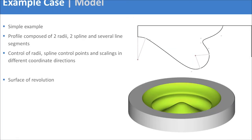Let's take a look at how this model is set up. For this test case, we used a rather simple piston bowl model. The profile of the piston bowl is composed of two radii, two spline segments, and several line segments that make up the complete profile. To control this profile, we can control the values of the radii, the positions of the spline control points, and we can also scale parts of the profile in different coordinate directions. To create the surface of the piston bowl, we take this profile and revolve it around the central axis to get a surface of revolution.